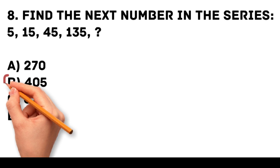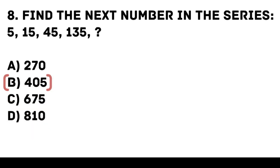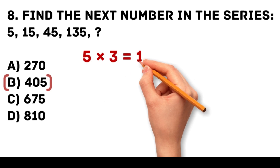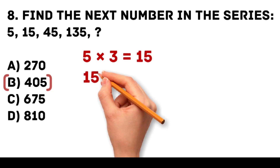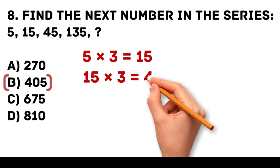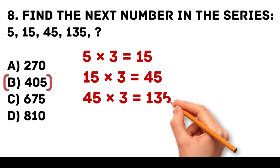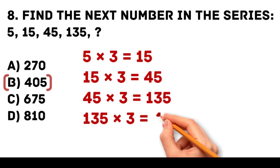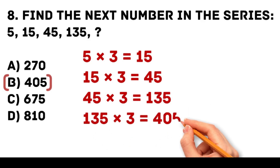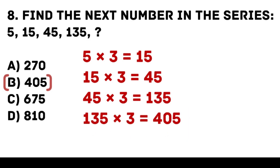Answer: B. 405. Each number in the series is multiplied by 3. 5 times 3 is equal to 15. 15 times 3 is equal to 45. 45 times 3 is equal to 135. 135 times 3 is equal to 405.